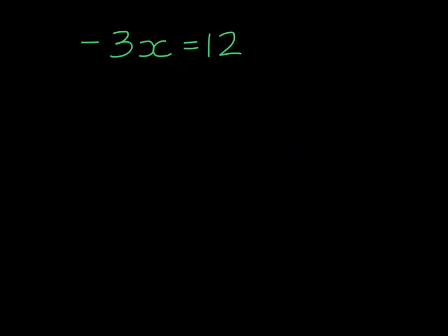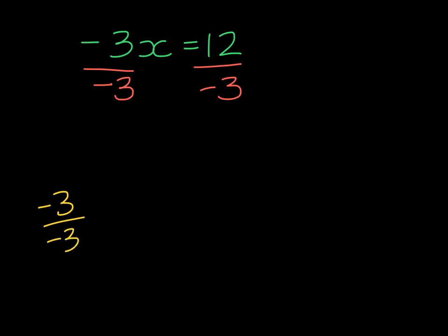In this equation we see that we have a negative 3 in front of X. This implies multiplication, so the inverse of multiplying by negative 3 is to divide by negative 3 on both sides. Remember that negative 3 divided by negative 3 gives us 1. So on the left hand side I've got 1 times X, and on the right hand side 12 divided by 3 is 4, and one negative sign of each makes that negative.